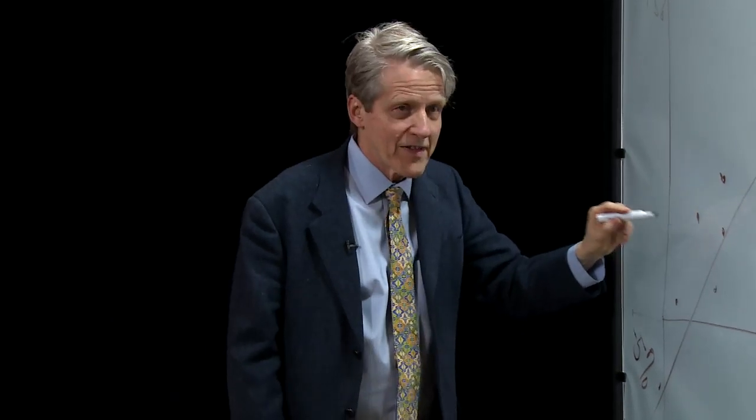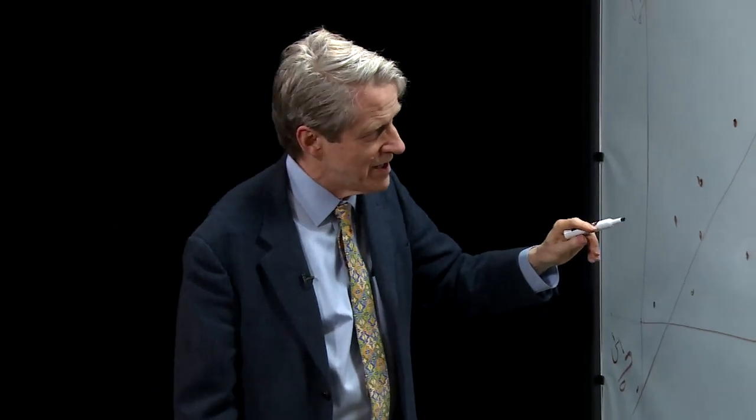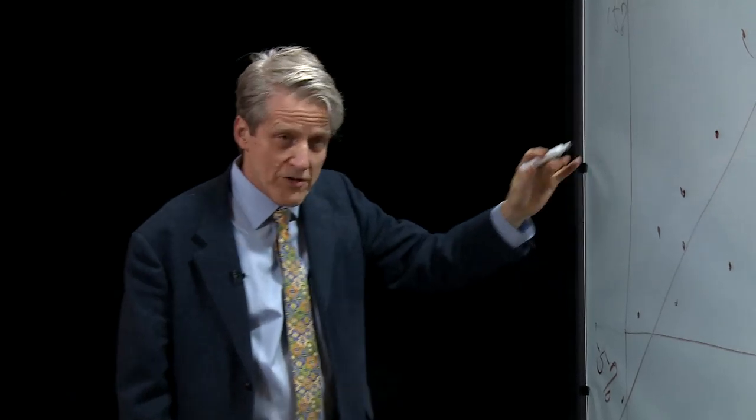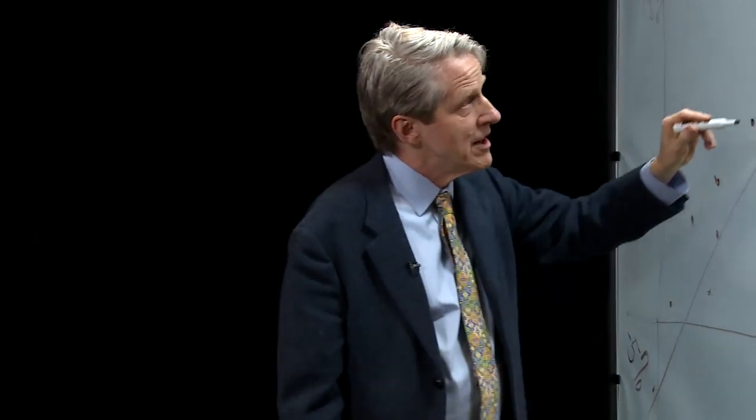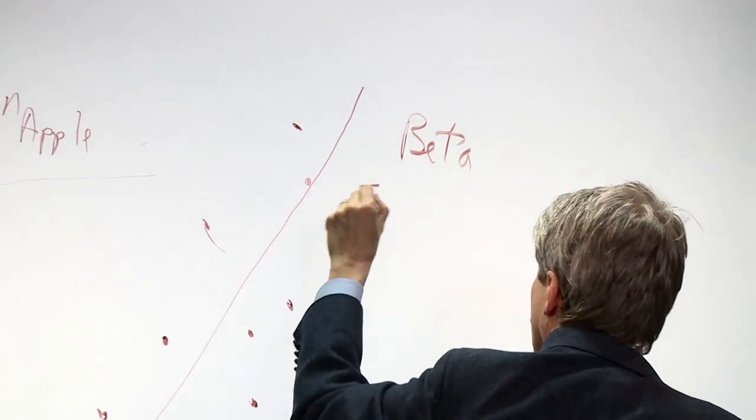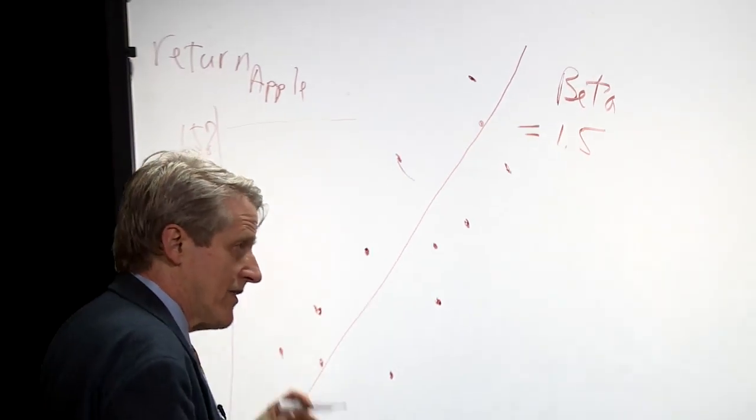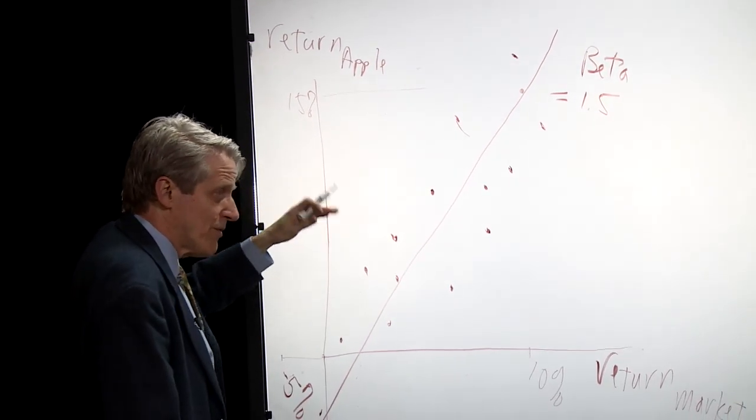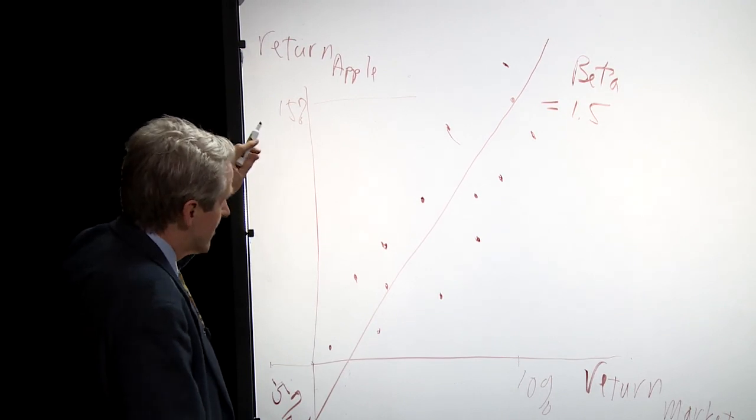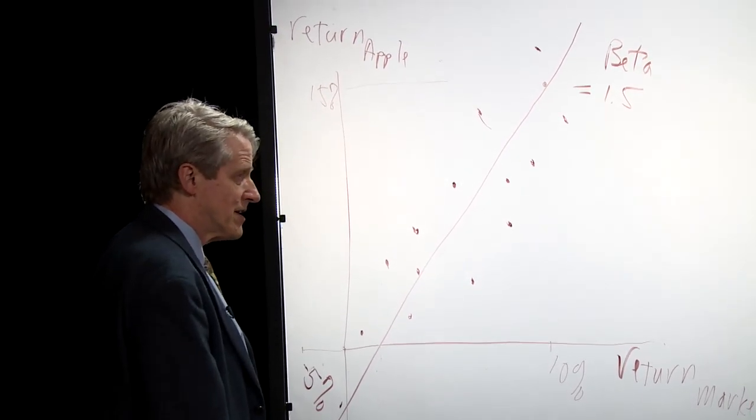And the slope of the line is called its beta. If it has a slope of one, that means the stock is reacting one for one with the market. But in the case of Apple, the beta is about 1.5. It's greater than one. The typical stock would just go one for one with the market. But this is a high beta stock. So it's reacting more strongly to the market.